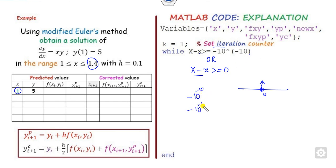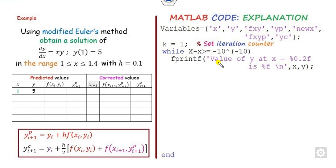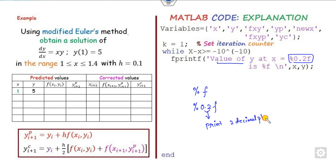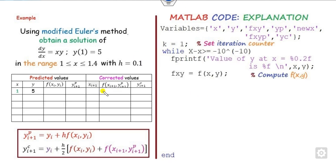You can also write minus 10 to the power 16 or any similar value. Once you write this condition, your first task inside the loop is to compute f(x,y). To print values, use fprintf with format specifiers: '0.2f' means print a floating point value with 2 decimal places. If you want 4 decimal places, replace with '0.4f'. The 'f' stands for floating point. So if you want 2 decimal places write 2, if you want 4 write 4, and so on.